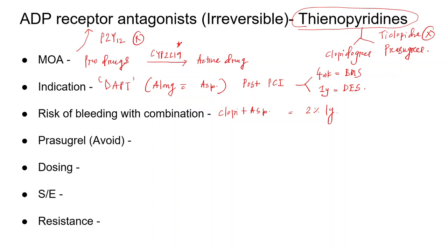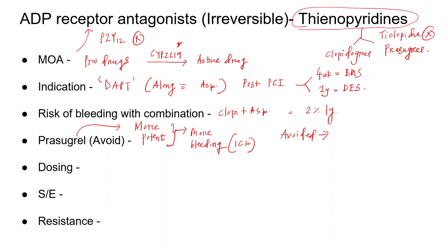Prasugrel differs from clopidogrel in that it is more potent, and therefore causes more bleeding — especially intracranial bleeds. That is why prasugrel is avoided in patients more than 75 years of age and in any patient with a history of cerebrovascular accident. It is also used with caution in patients weighing less than 60 kg and those with renal failure.